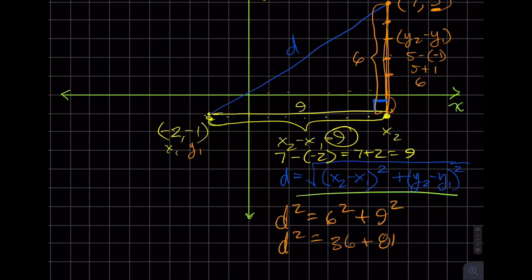36 plus 81 turns out to be d² equals, what is that, 117. And so if we take the square root of 117 - and I think that is as simplified as possible, the square root of 117...